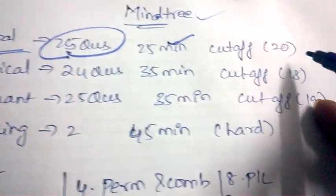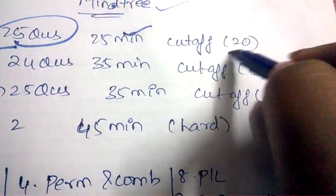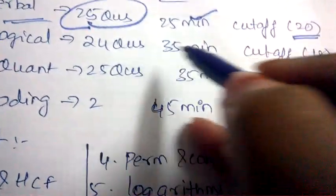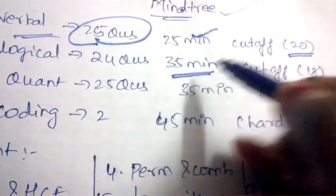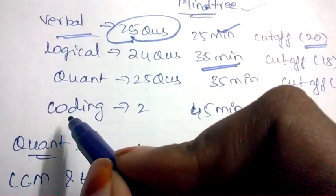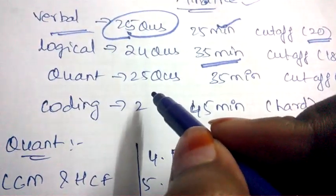Coming to logical, 24 questions will be asked and the time will be 35 minutes, whereas the cutoff will be 18. And coming to quant, 25 questions will be asked and 35 minutes will be given and cutoff will be 19.